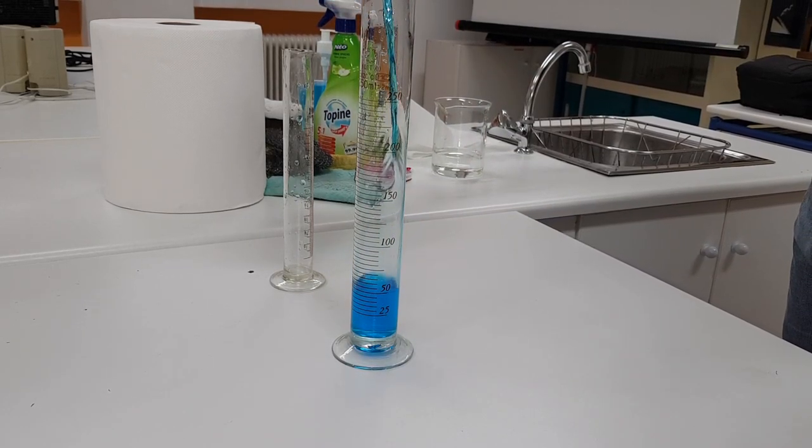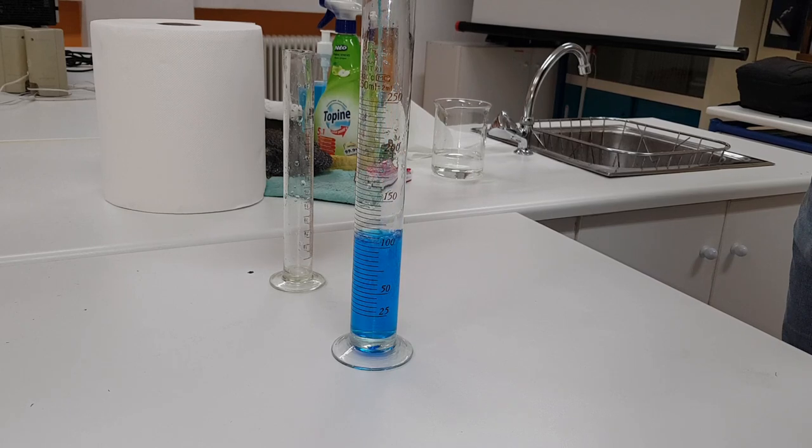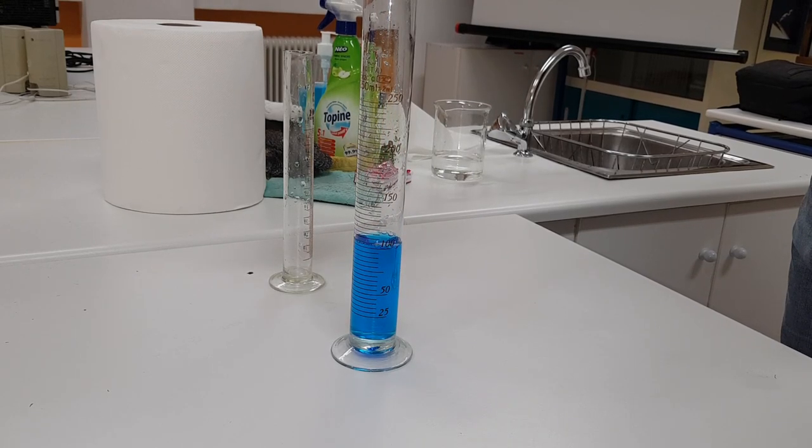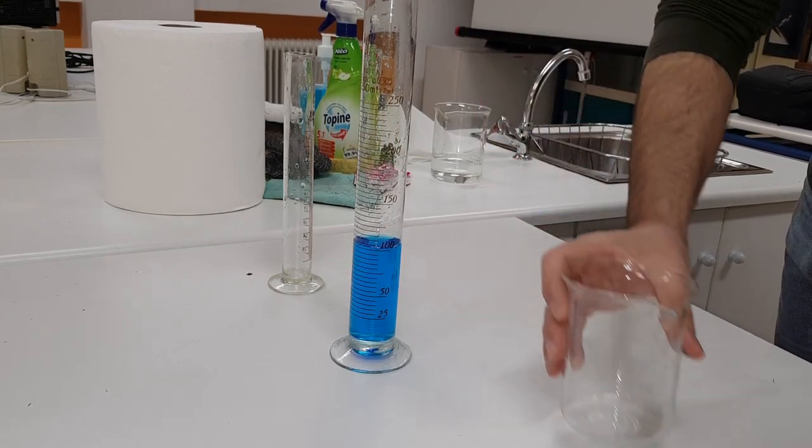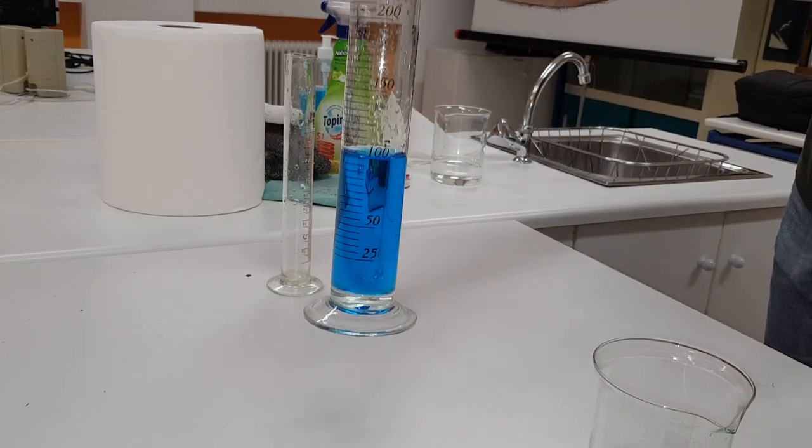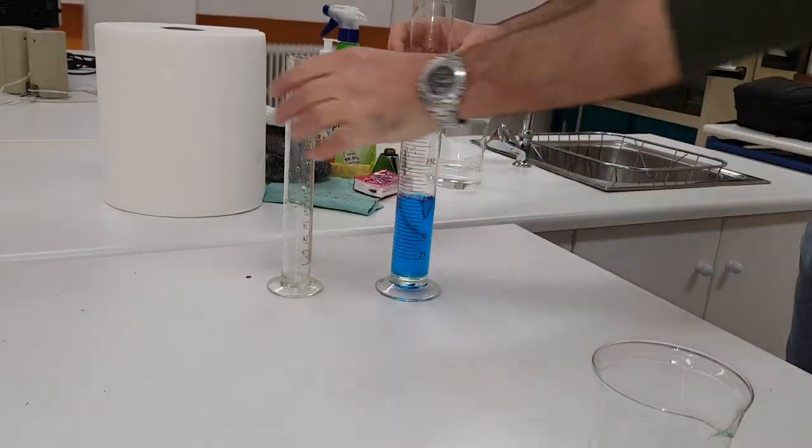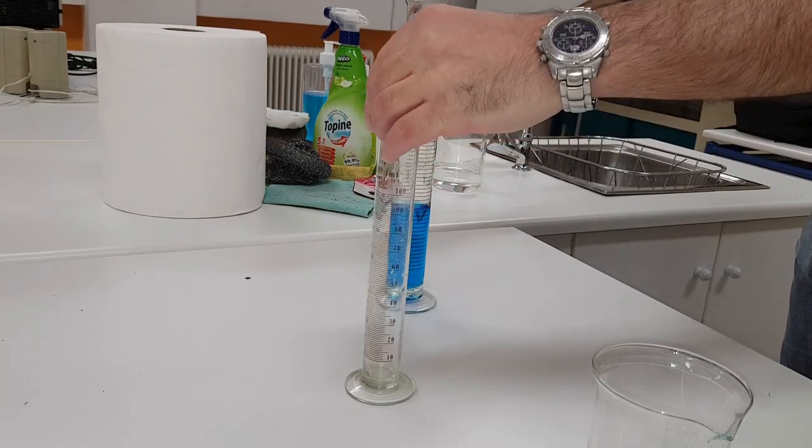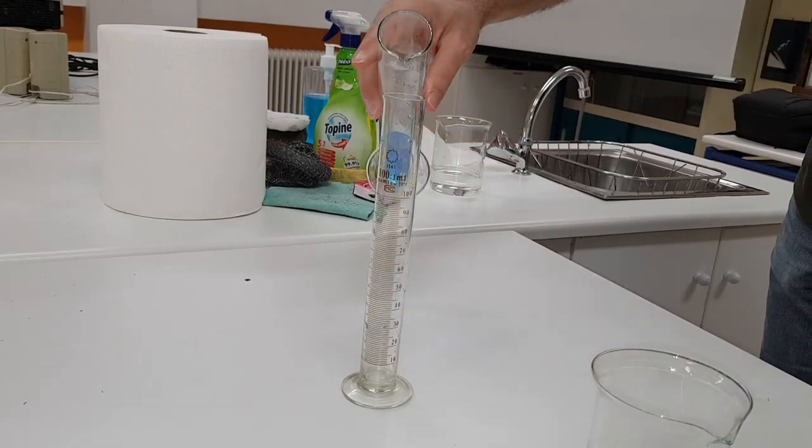In the video, we use water that we have colored with confectionery paint. When poured into the 300 milliliters beaker, it takes the shape of the beaker. When poured into the 250 milliliters graduated cylinder, it takes the shape of the 250 ml cylinder.